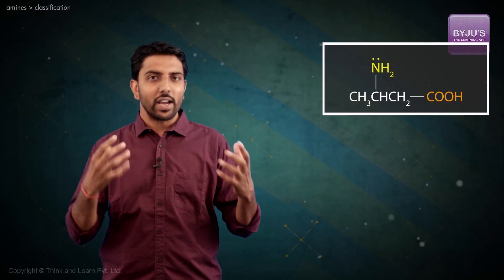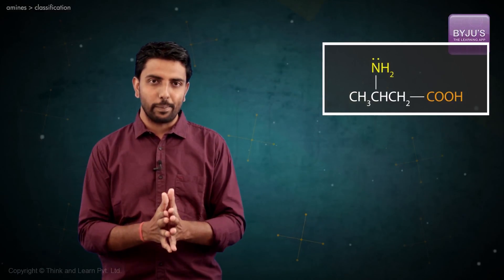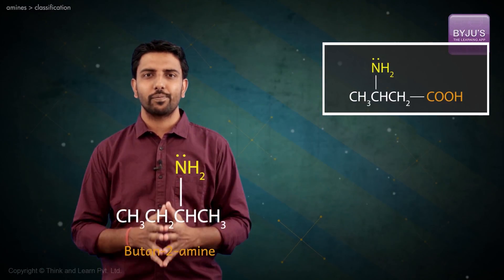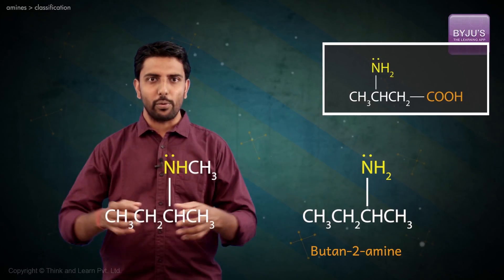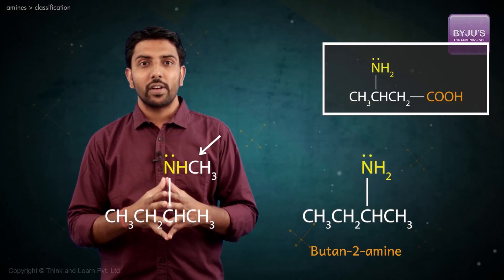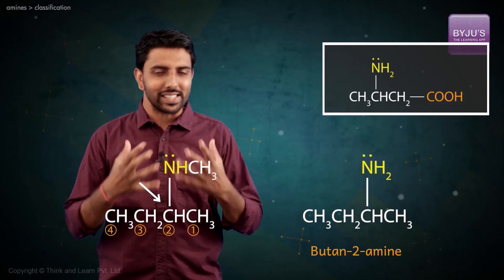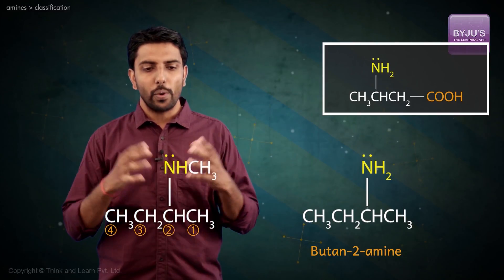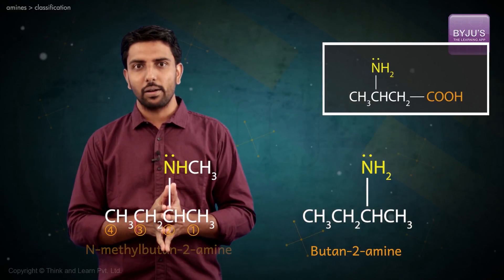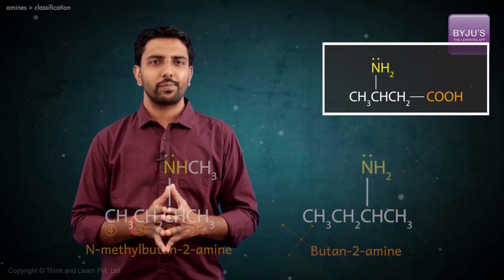Cyclohexyl dimethylamine — as a final example, try naming this compound yourself. Now let us try and figure out the IUPAC name of some amines as well. This one is pretty easy — this is called butan-2-amine. What about this compound? There is an N-substituted methyl group, and the amine is on carbon number two, so butan-2-amine makes sense. But then how do we signify where the methyl group is? We name this compound N-methyl butan-2-amine.